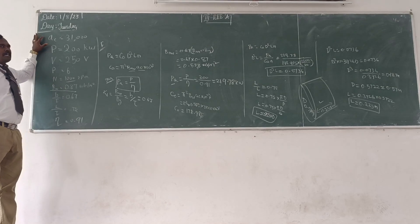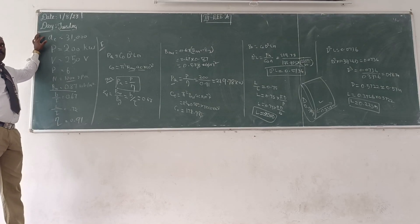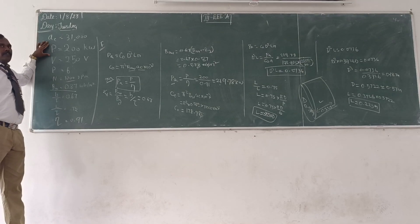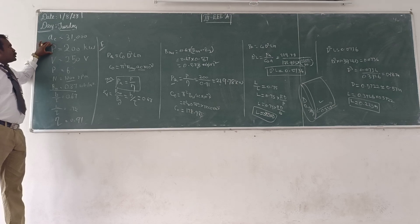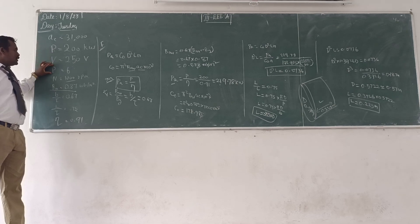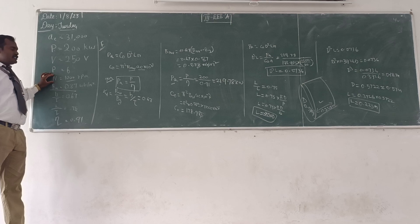Today we are going to discuss another problem. The given data is: 200 kW, 250 volt, 6 poles, 1000 rpm DC generator.